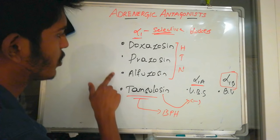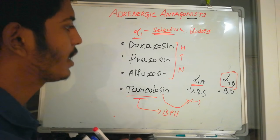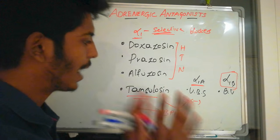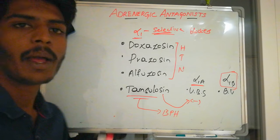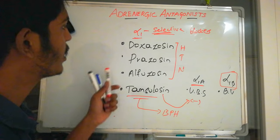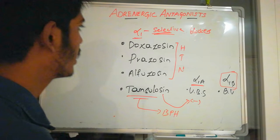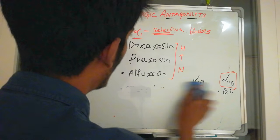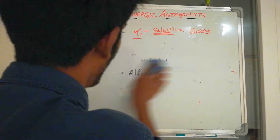Doxazosin and prazosin have effects on both alpha 1a and alpha 1b. They can be used when a patient has both hypertension and benign prostatic hyperplasia. However, if a patient has only BPH, it is better to use tamsulosin, because using doxazosin or prazosin will cause hypotension.